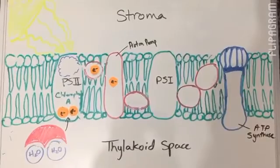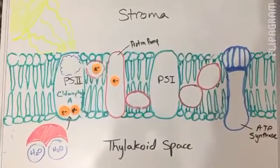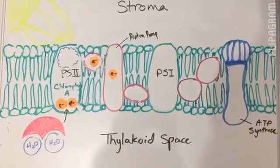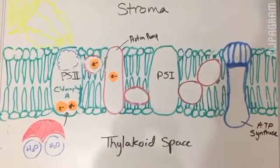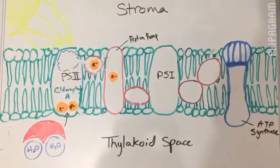Two water molecules bind to an enzyme at the reaction center. This enzyme splits the water and uses the electrons to fill the empty space left by the old electrons in Photosystem II.